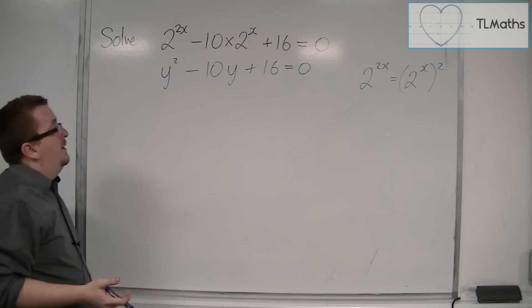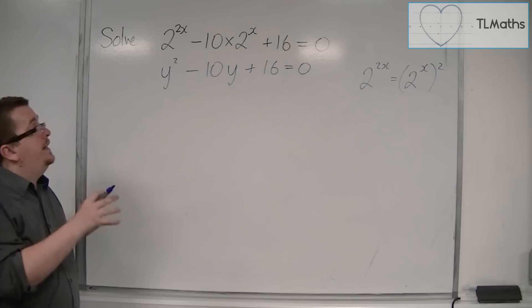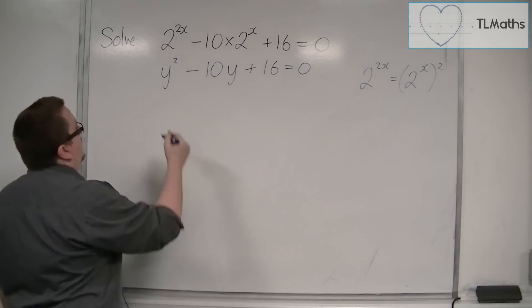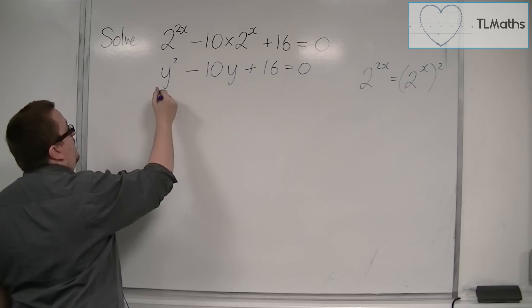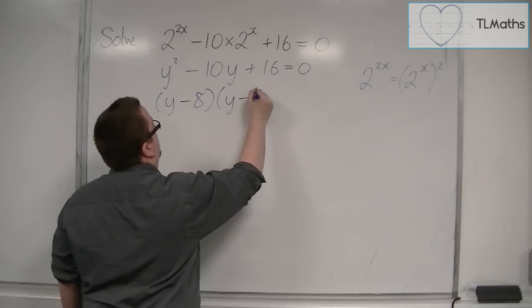So, y² - 10y + 16 = 0. This is really used as an aid to make sure that you can factorise it. So, this factorises to (y - 8)(y - 2) = 0.